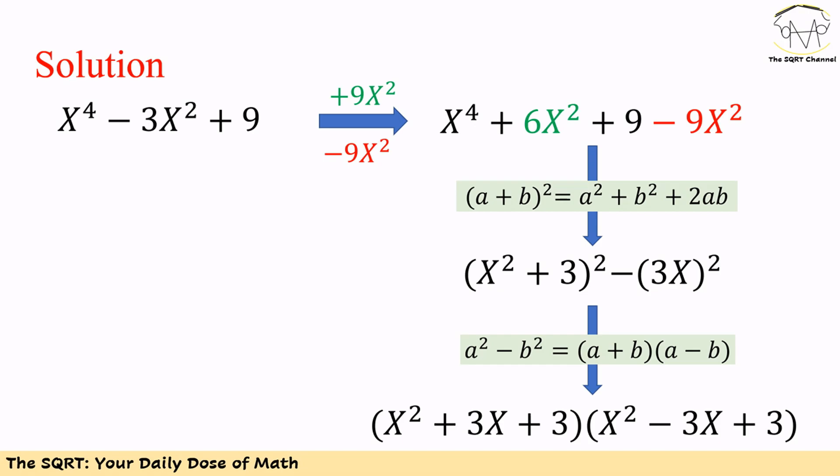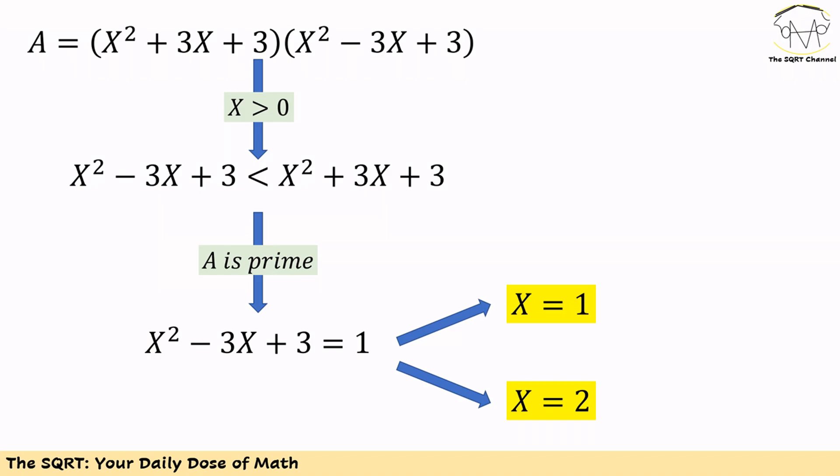The expression now contains two factors: the first term is x² + 3x + 3 and the second term is x² − 3x + 3. Since x is greater than zero, the first term is greater than the second term. We have two facts: the expression is the product of two terms, and it is a prime number.